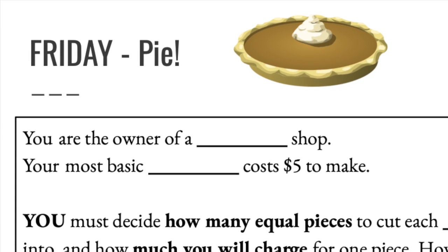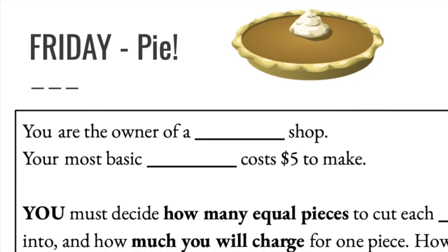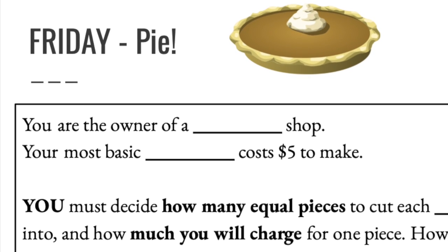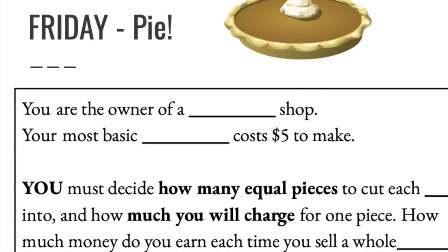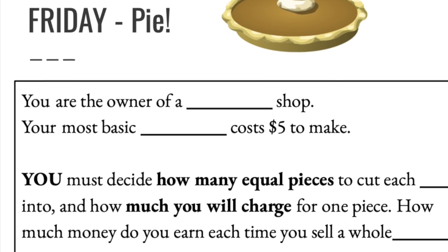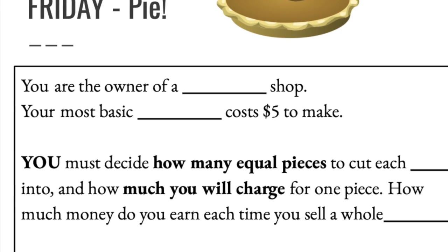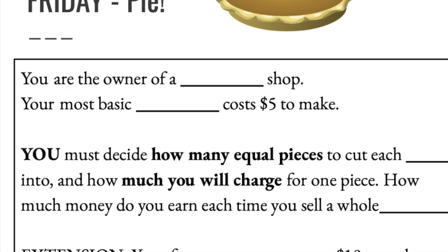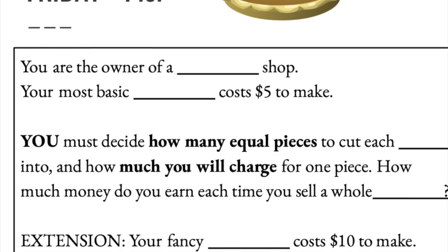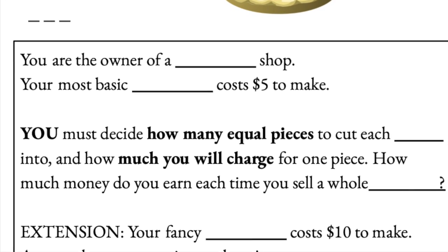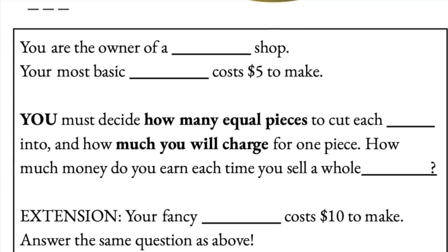This problem is going to ask you to think about a lot of different things, so I'm going to walk through it slowly and go one piece at a time. The first decision you have to make is what kind of shop do you own. I chose pie, and your most basic pie costs $5 to make. You must decide how many equal pieces to cut each pie into and how much to charge for one piece. The extension goes through the same problem with different numbers, but this example covers just the first part.